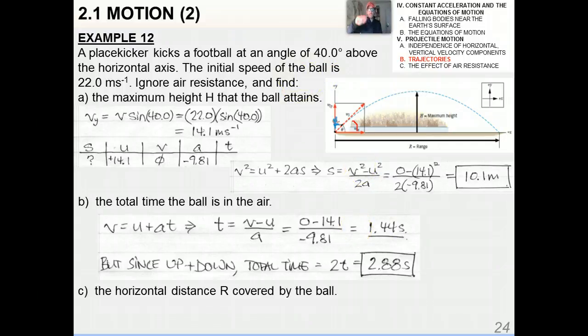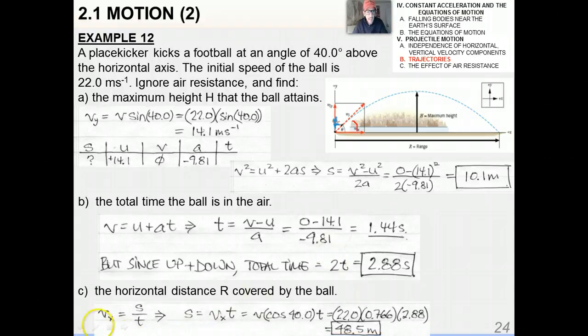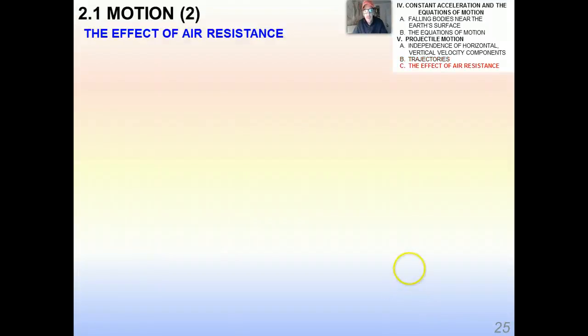And then as usual, here's my procedure for finding the horizontal distance R—total time in the air times initial velocity in the x component. And I got, in the x direction, 48.5 meters.